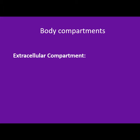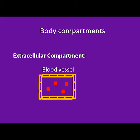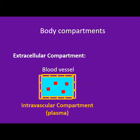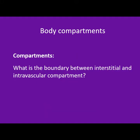Inside the extracellular compartment, we have blood vessels, which create another boundary. Everything inside the extracellular compartment but outside the blood vessels is called the interstitial compartment. Everything inside blood vessels — except red blood cells and white blood cells — is called the intravascular compartment. The boundary between the interstitial and intravascular compartments is the vascular endothelium.